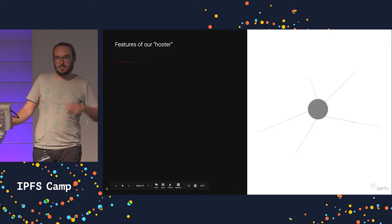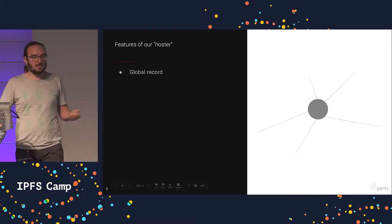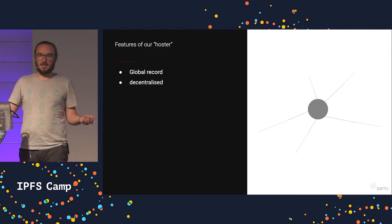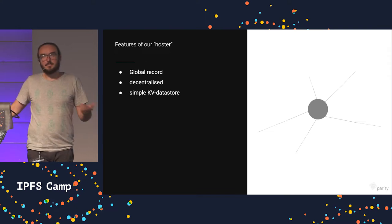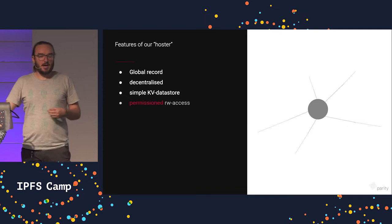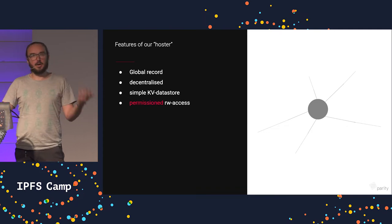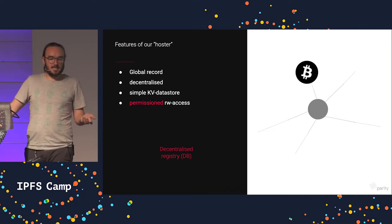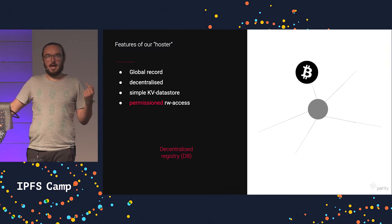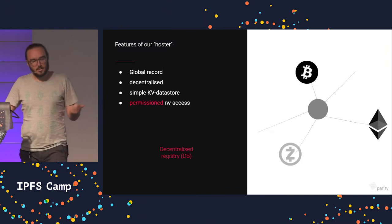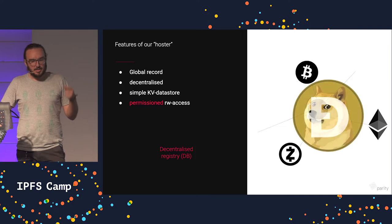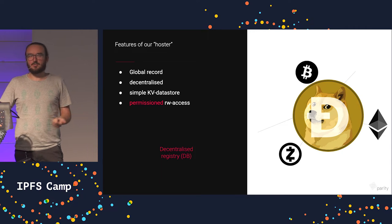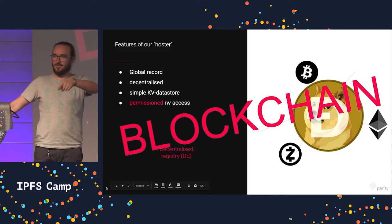So what do we want from our hosting solution in this particular case? We want it to be a global record — it needs to always be there. We want it to be decentralized, obviously. A simple key-value store should be enough, but we need some permissioning on the keys and who can write to them. Essentially, we want a decentralized registry. You might have heard about these — like Dogecoin? That's a decentralized registry, right? They use blockchain. So let's take a look: is blockchain a possible solution here?